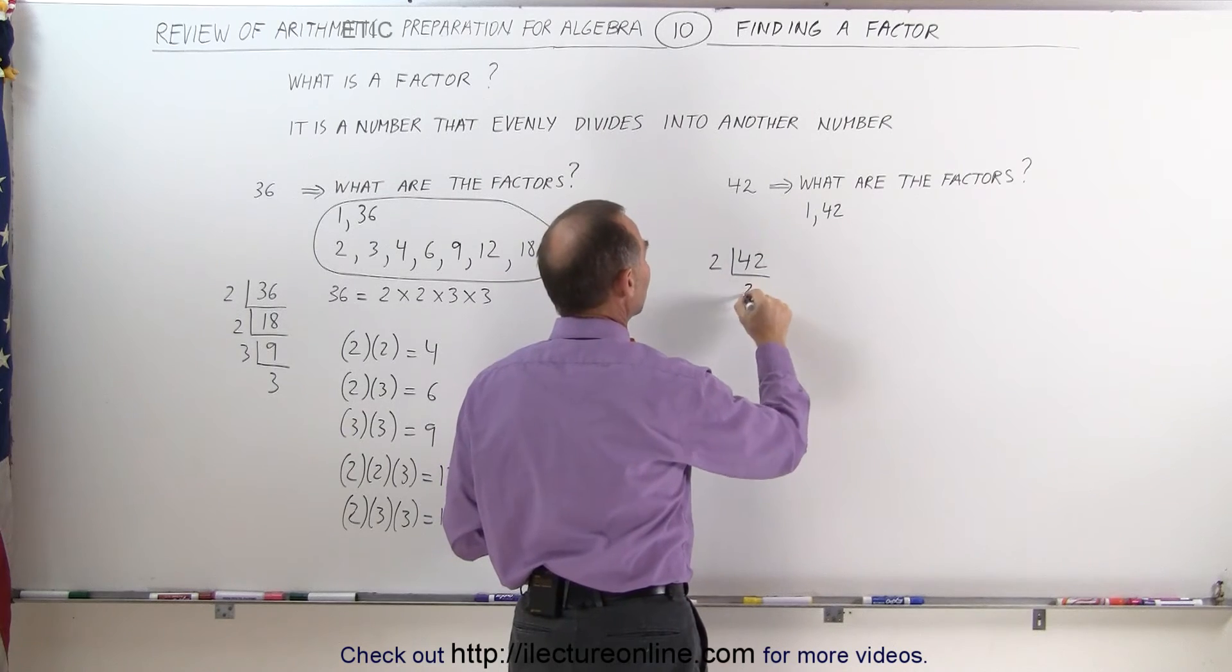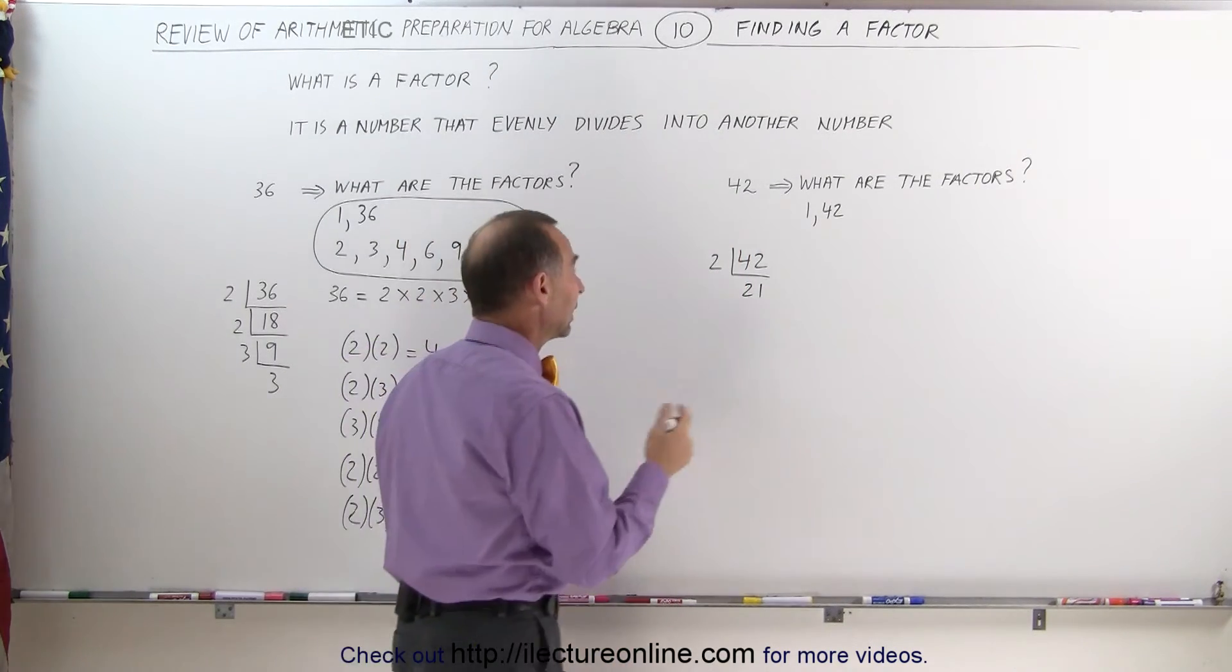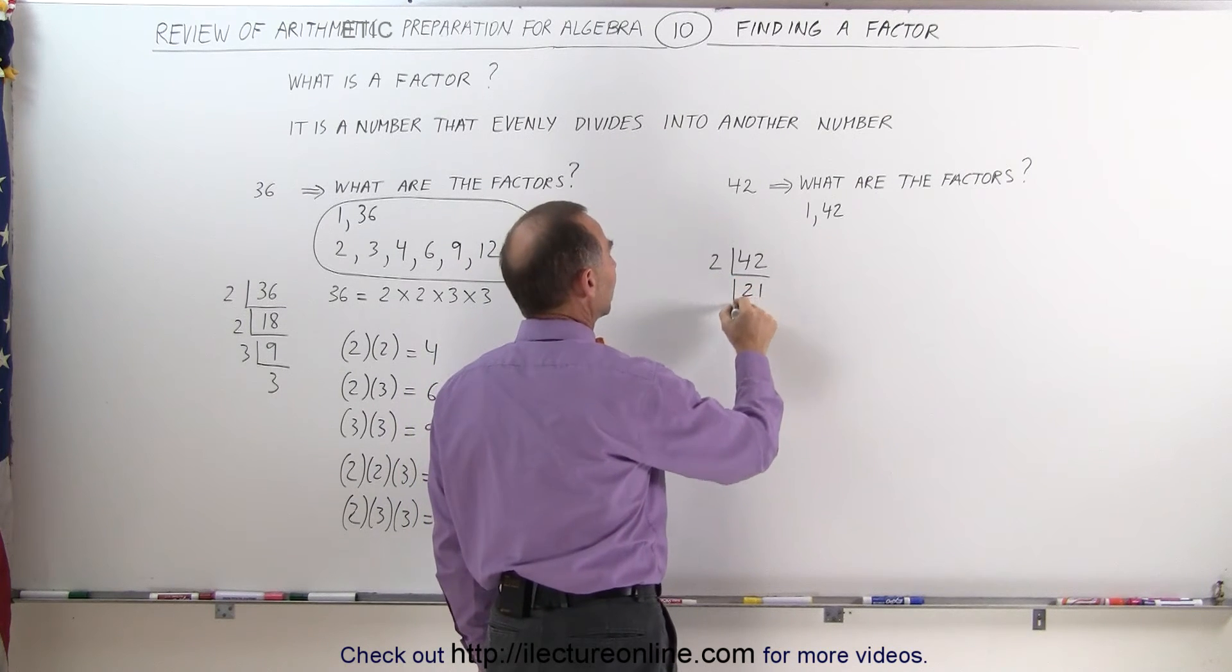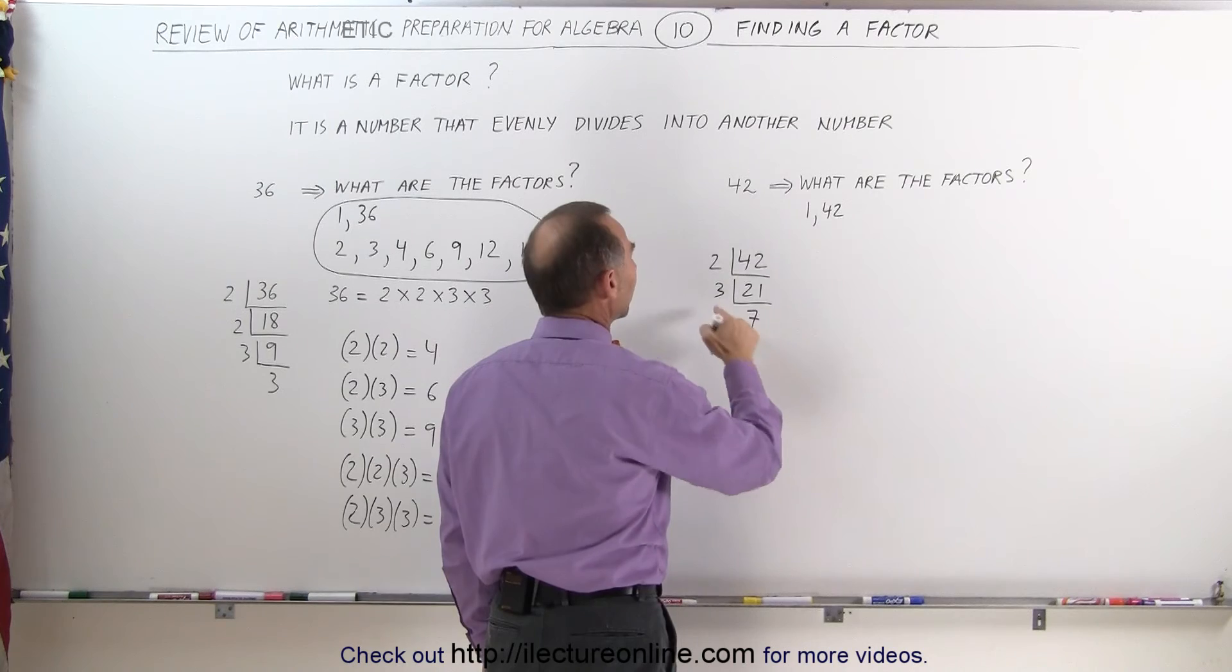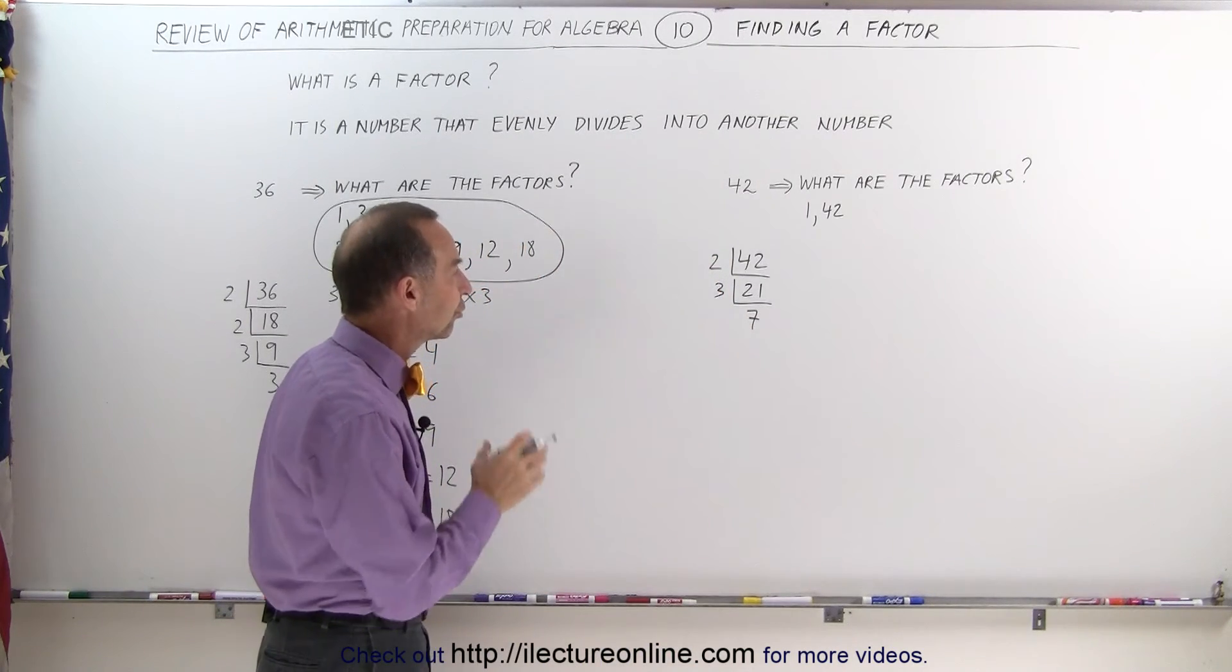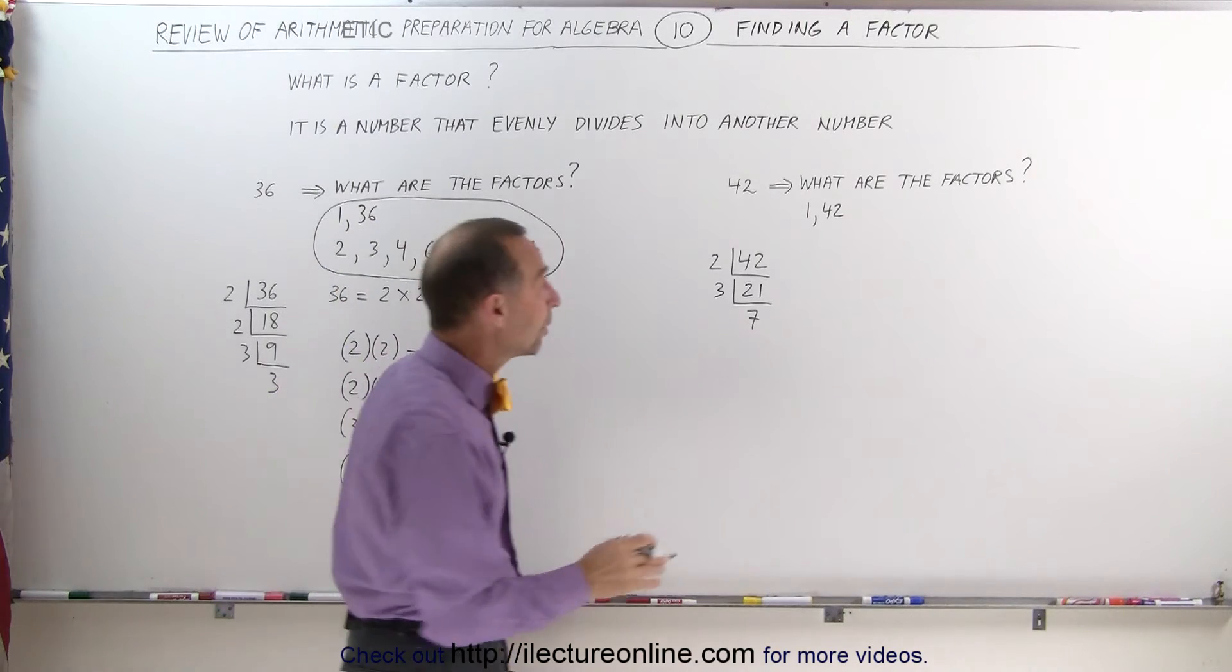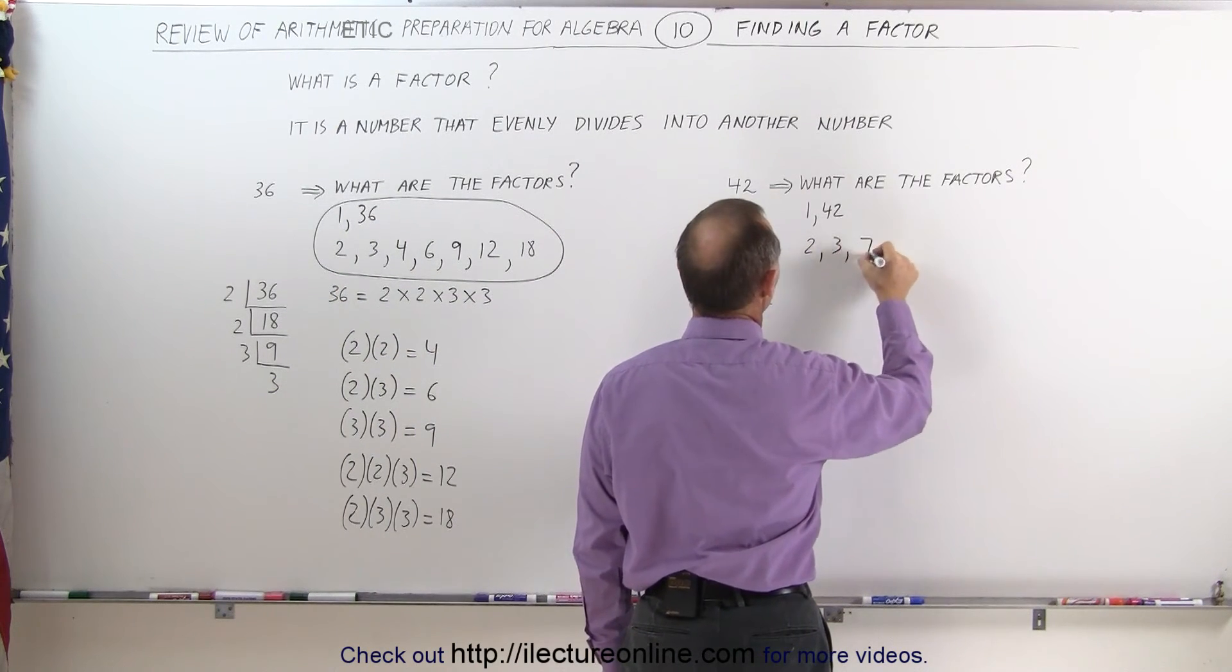42 divided by 2 gives me 21. Now that's no longer even, so we can no longer divide 21 by 2. We take the next prime number, 3. 3 goes into 21, 7 times. 3 and 7 are prime numbers. That means we're done. Those are all the factors: 2, 3, and 7 also become factors of 42.